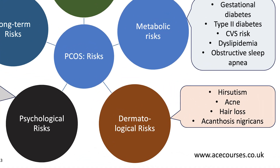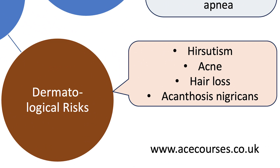Now let's look at dermatological consequences. These include hirsutism or excessive hair growth, acne, hair loss, and acanthosis nigricans, which presents as dark skin patches particularly on the back of the neck and under the arms. It's important to make a full assessment of dermatological consequences, ideally using validated tools.